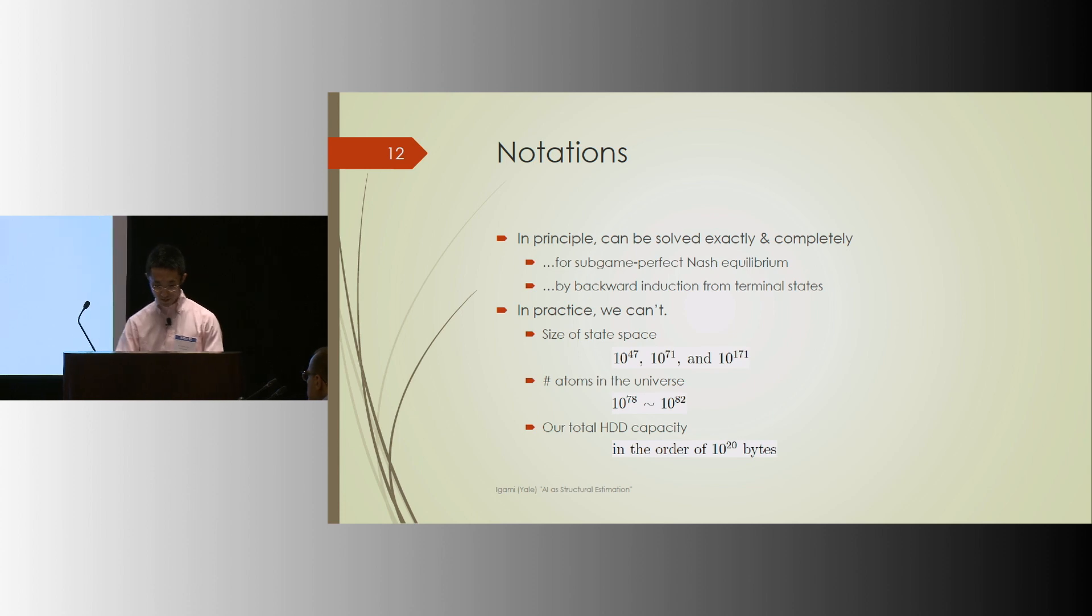Now, all this means that, in principle, this kind of model can be solved backward from terminal states. And we should be able to find a unique sub-game-perfect Nash equilibrium. But in practice, even today's computers can't solve these problems within our lifetime because the state space is huge. For chess, it's 10 to the 47. For Shogi, it's 10 to 71. And for Go, it's 10 to 171. And the number of atoms in the universe is, well, according to Wikipedia or according to our speaker at lunchtime talk, it's in that order. And for your information, I've done some research on hard drive industry and the world's humanity's storage capacity is in the order of 10 to the 20 bytes or so. So we have to make some quick, dirty ways to make programs practical.